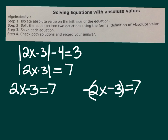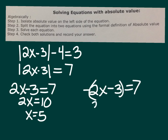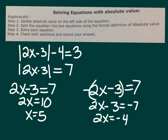Solving the first equation: 2x minus 3 equals 7, so 2x equals 10, and x equals 5. For the negative version, dividing by the negative gives 2x minus 3 equals negative 7; adding 3 gives 2x equals negative 4, so x equals negative 2. We've got two answers, which makes sense because the absolute value graph makes a V shape, giving two x-values for a given y. Step four: check to be sure.